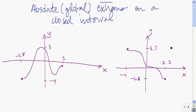Let's talk about finding absolute extrema on a closed interval. If we take a look at this function here, which is defined from negative 3.8 to 2, we see that the absolute maximum value is 3, and it happens at this critical point. The absolute minimum value is negative 4, and it happens at that endpoint.